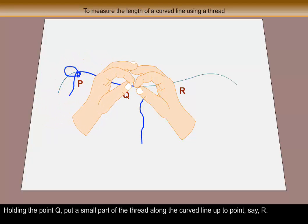Holding the point Q, put a small part of the thread along the curved line up to point say R.